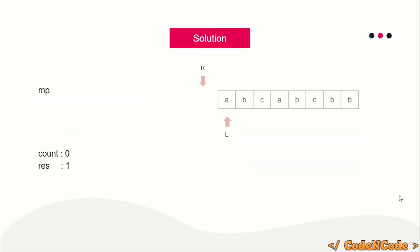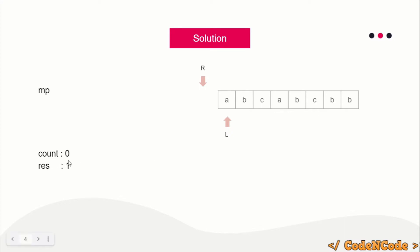We will keep incrementing R as long as count equals zero — meaning there are no invalid characters in the range L to R. If count becomes positive, we keep incrementing L to reduce the range and hence reduce the frequency of invalid characters. When incrementing R, you are expanding your range and adding a character; when incrementing L, you are removing a character from the substring.